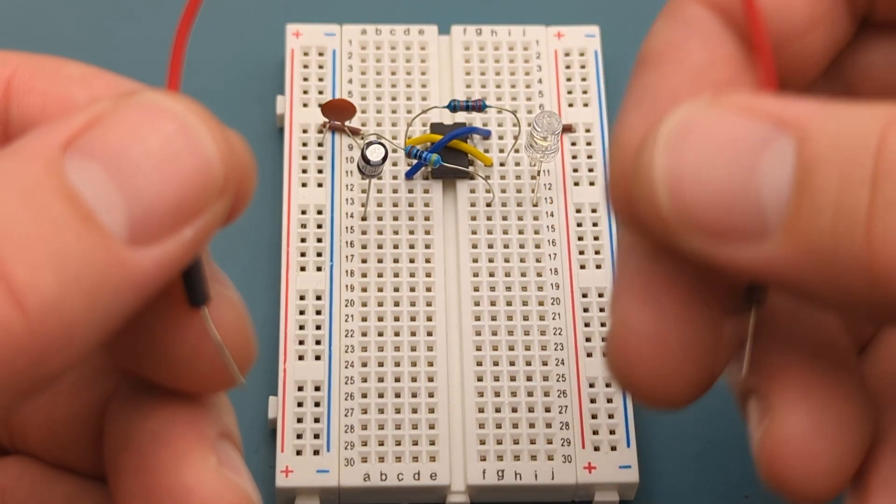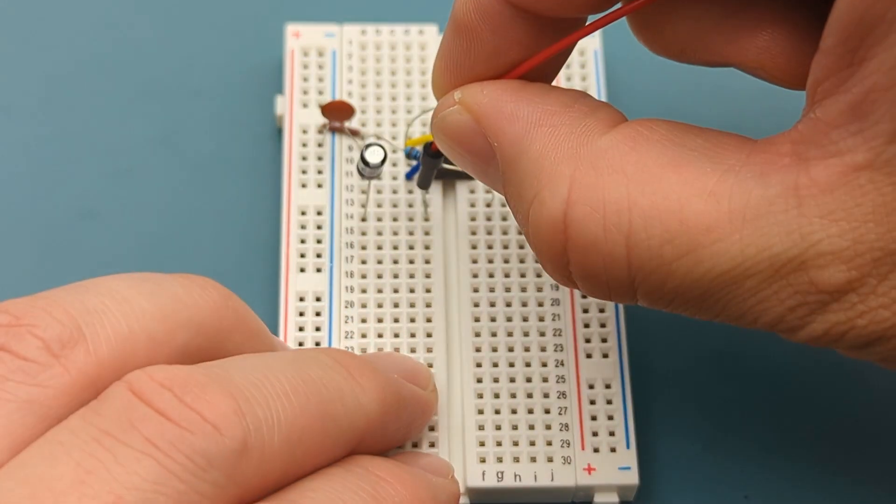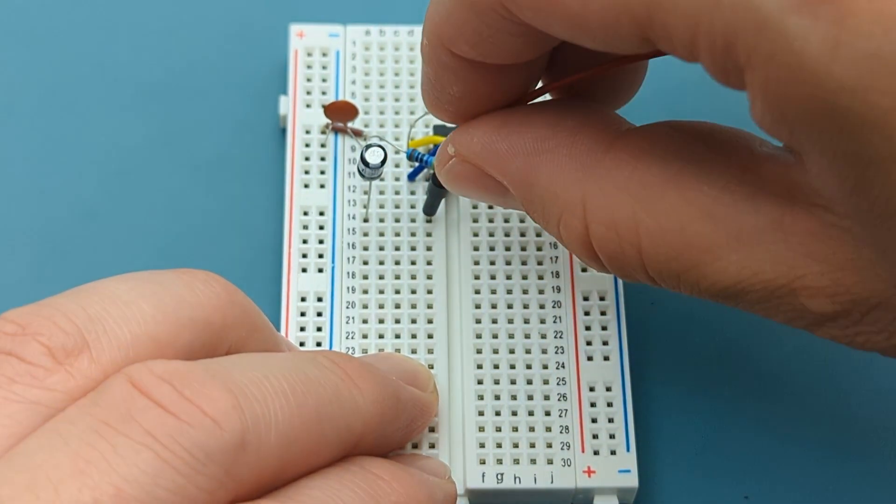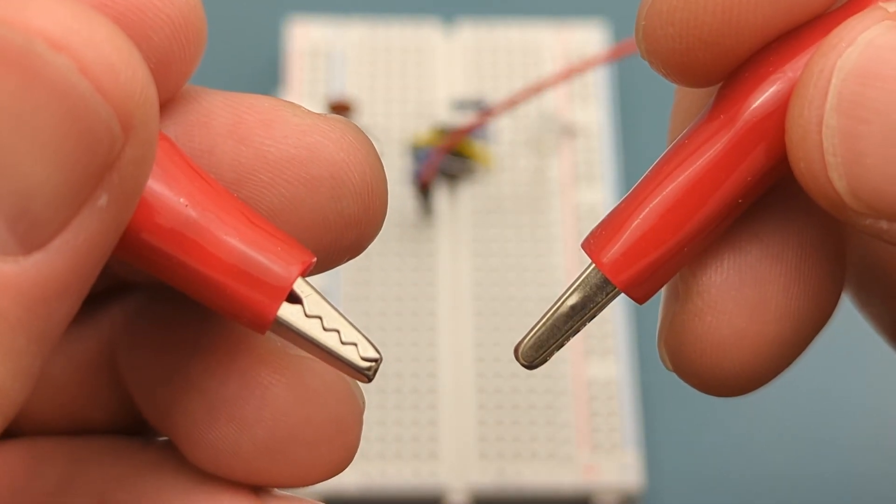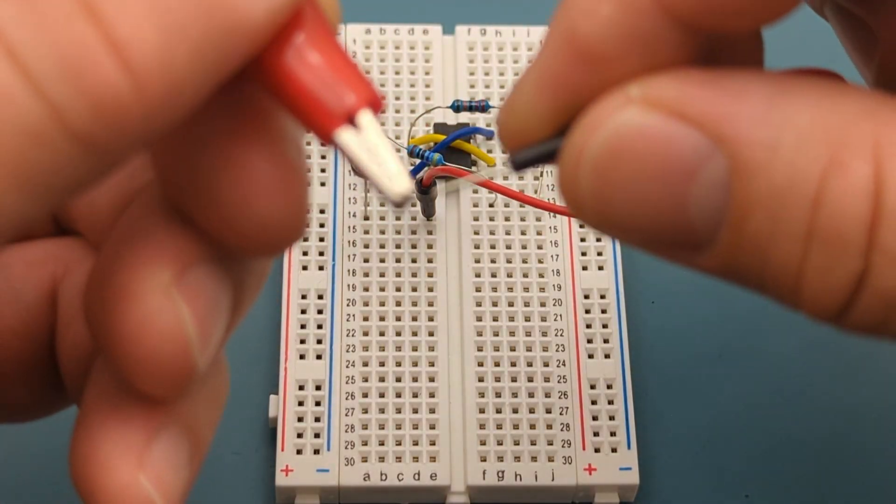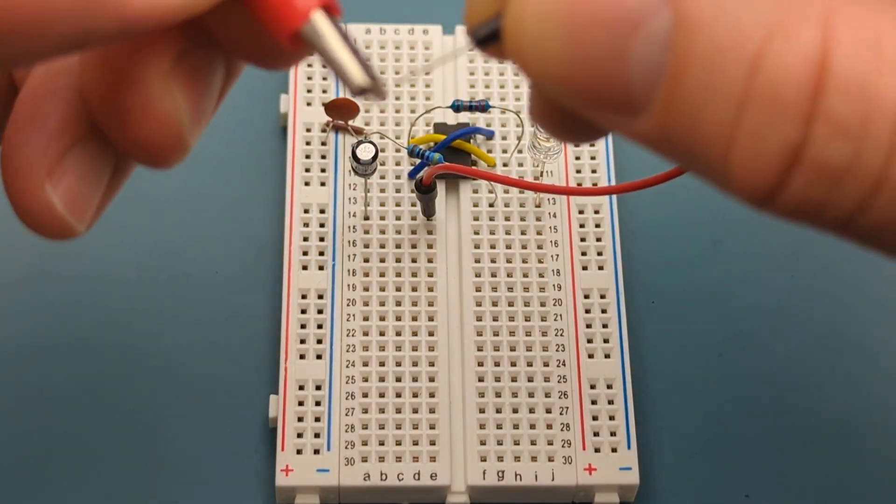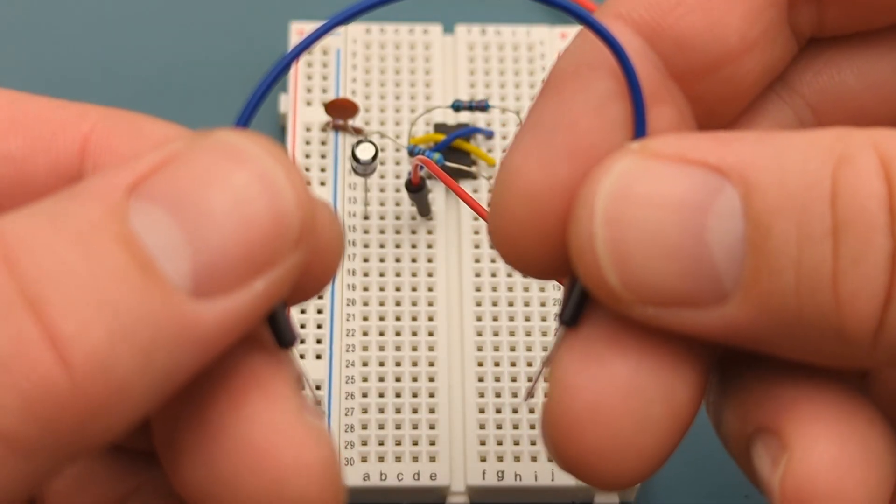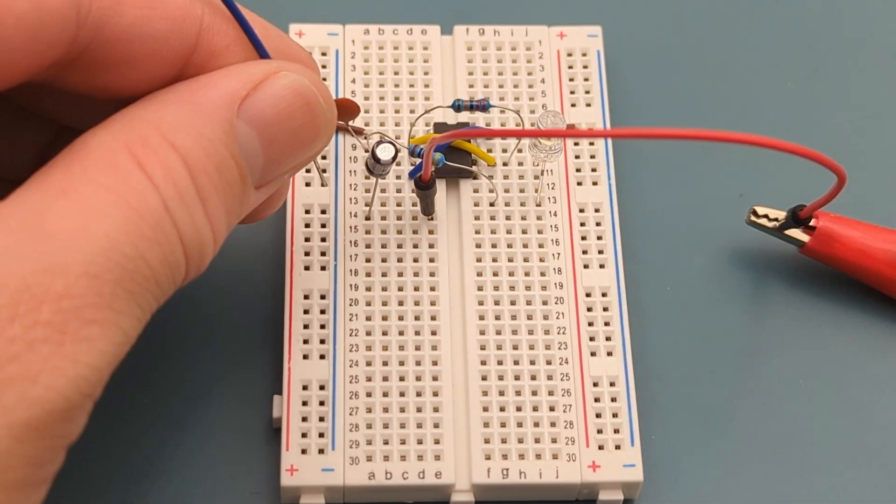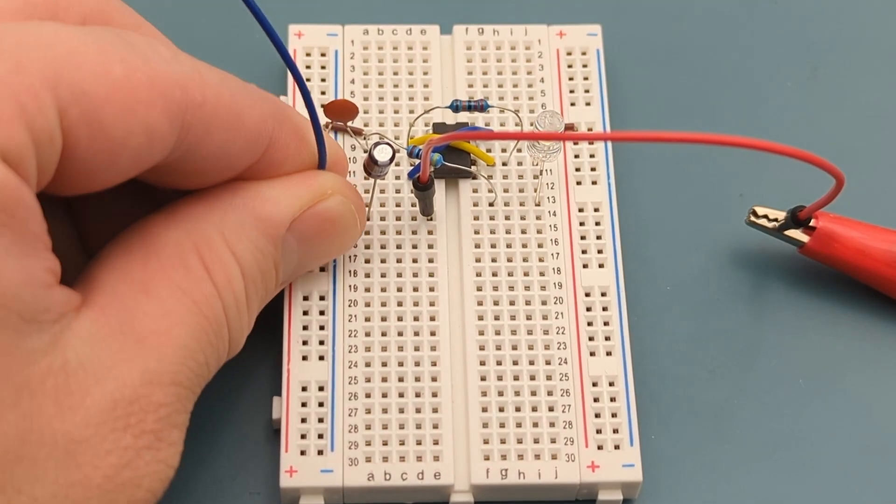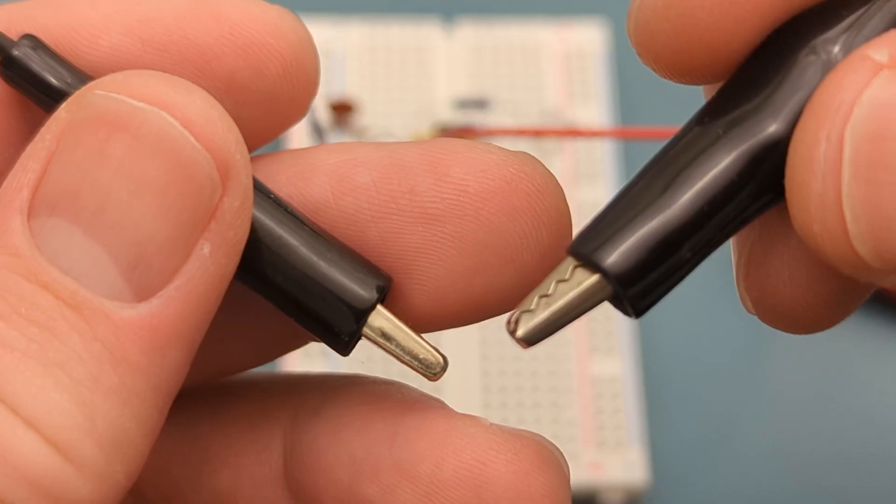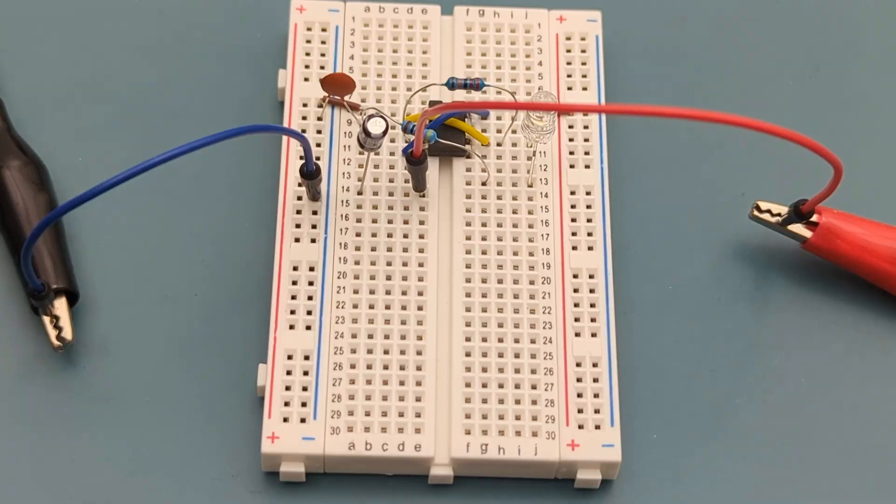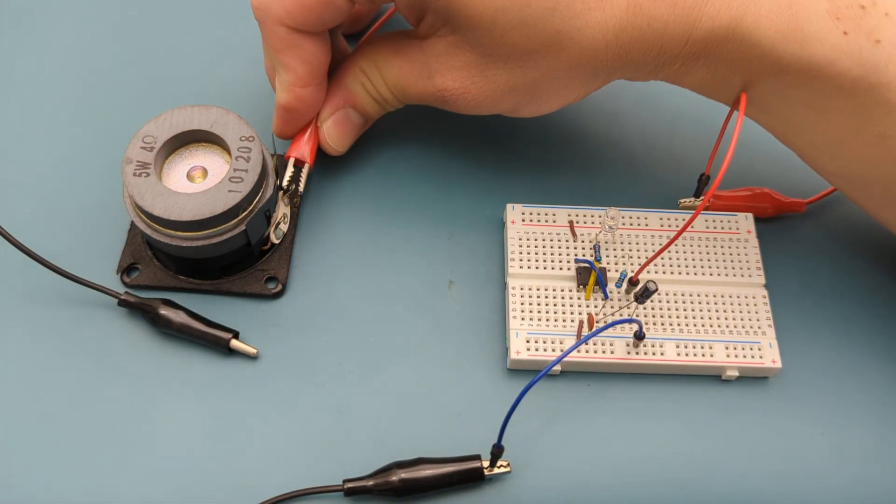Insert a jumper wire into the same row as the 10 microfarad capacitor. Attach the jumper wire to the alligator clip. Insert a jumper wire into the negative rail. Attach the jumper wire to the alligator clip. Connect the other ends of the alligator clips to the terminals of the 5 watt speaker.